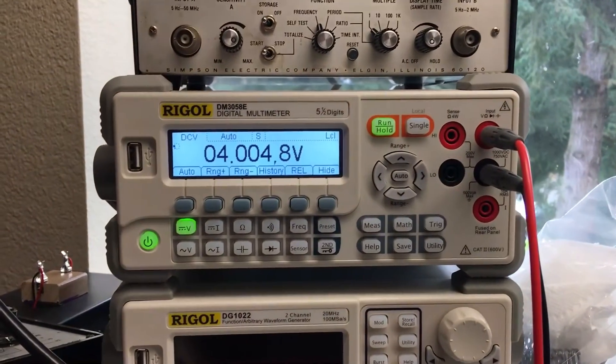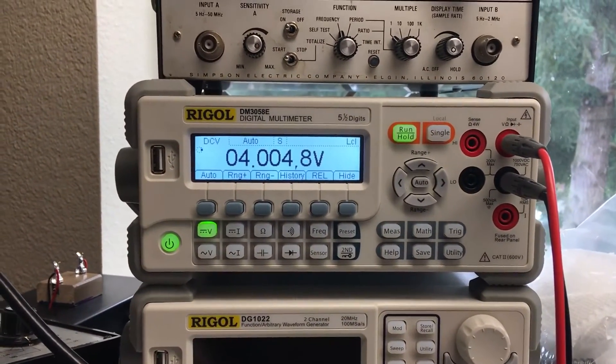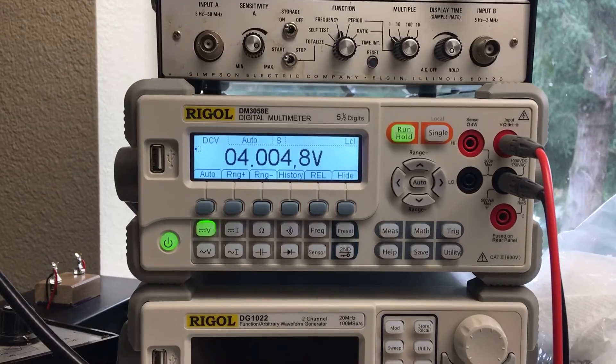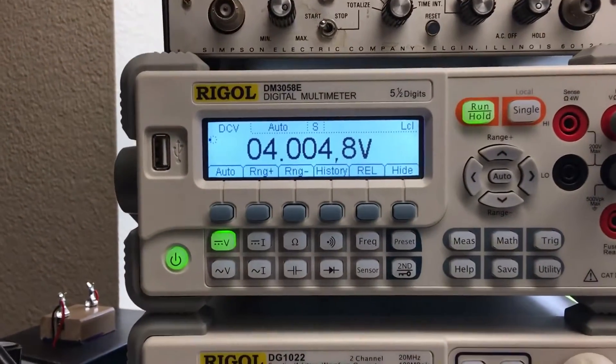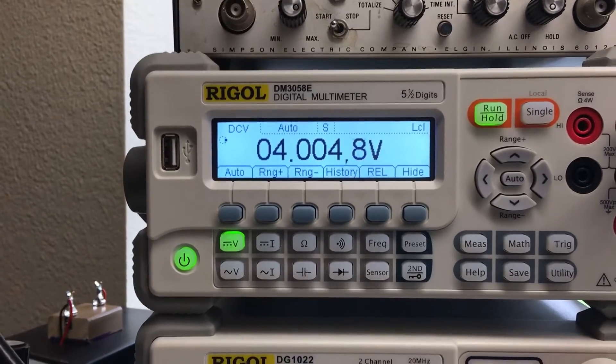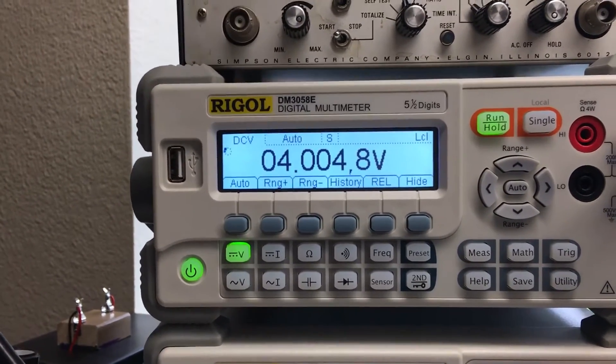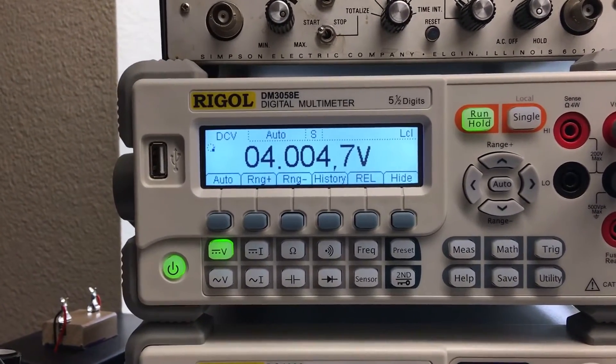If we come back over to the DMM, we can see that there's 4.0048 amps. This is on the voltage display. Just simply replace the V with an A in your head. Very nice.